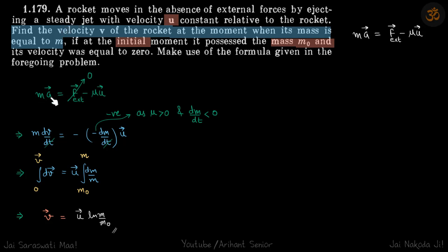Previously we proved that m dv/dt for the rocket is equal to F external minus mu times u vector, where mu is a positive term indicating the mass ejection rate. Using this formula, let's solve this problem.